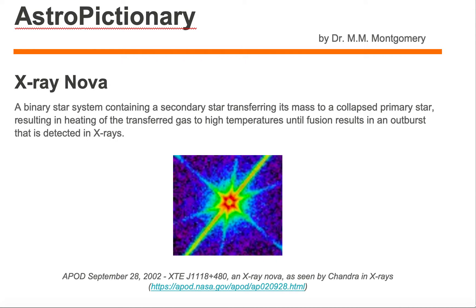An X-ray nova is a binary star system containing a secondary star transferring its mass to a collapsed primary star, resulting in heating of the transfer gas to high temperatures until fusion results in an outburst that is detected in X-rays. The key word here is outburst.